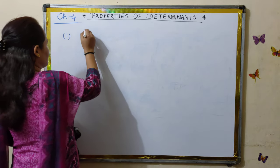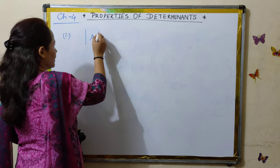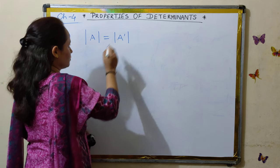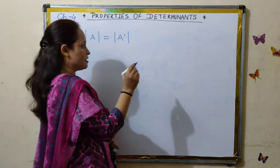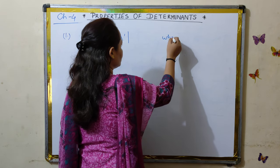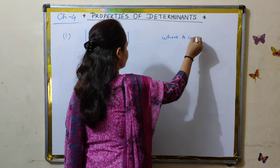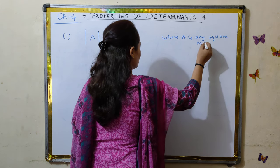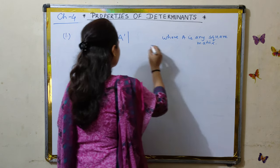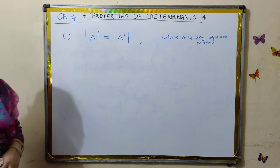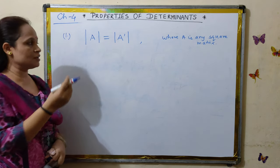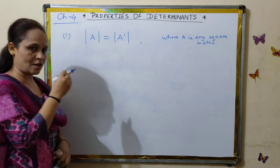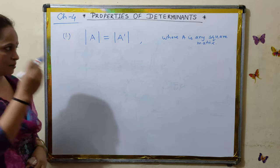The first property is: the determinant of A is the same as the determinant of the transpose of matrix A, where A is any square matrix of any order. So the property states that the determinant's value does not change even if you take its transpose.